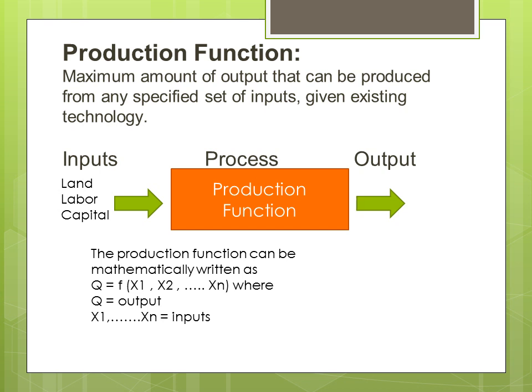What is the production function? Classical economists like Von Thünen gave his theory about factors of production in 1826. In 1894, Professor Wicksell gave the concept of production function. In 1901, Hicks, a new classical economist, played the most important role in the concept of production function. The production function is the maximum amount of output that can be produced from any specified set of inputs given existing technology.